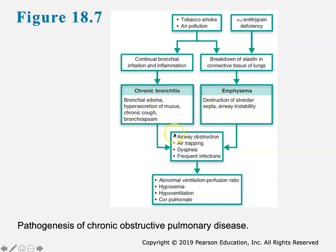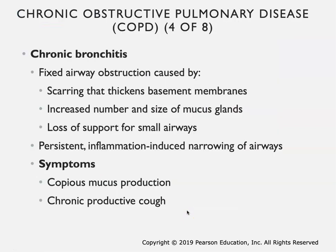Both chronic bronchitis and emphysema lead to airway obstruction, air trapping, dyspnea, and can also lead to frequent infections because things are trapped there and you're getting destruction of respiratory structures. This results in an abnormal ventilation to perfusion ratio, hypoxemia, hypoventilation, and the cor pulmonale mentioned earlier.